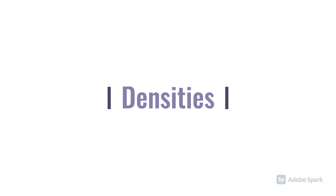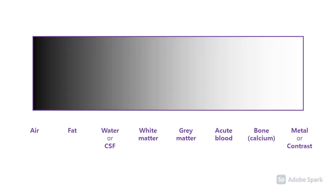Moving on to look at the different densities that you can see on a CT scan. Black represents air, and at the other end of the spectrum, metal or IV contrast appear very white or hyperdense. Everything else is in the middle. One key point to highlight is that acute blood looks reasonably white, reasonably hyperdense, but that changes with time and it does become greyer. So those are the key densities that we're looking out for.